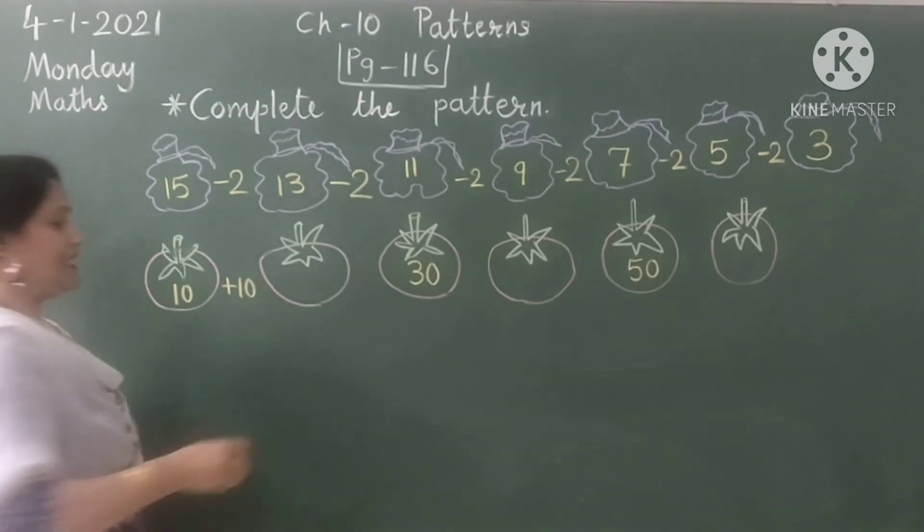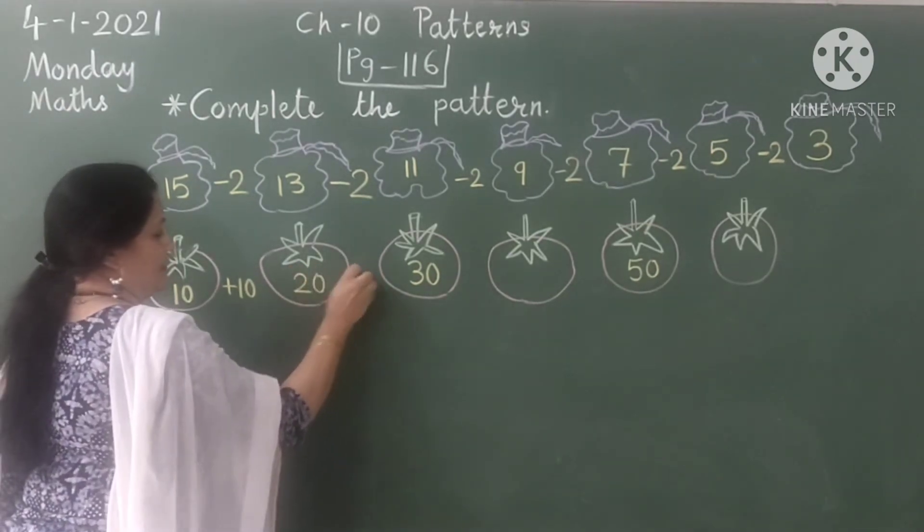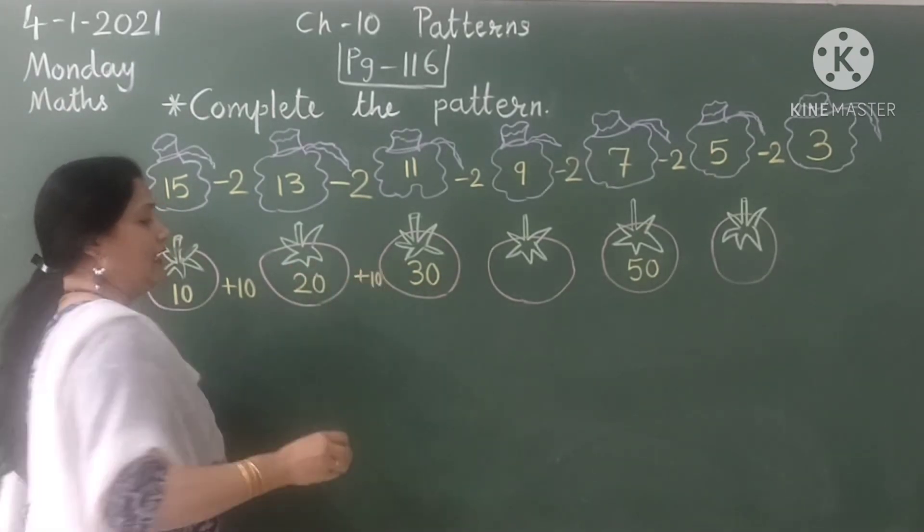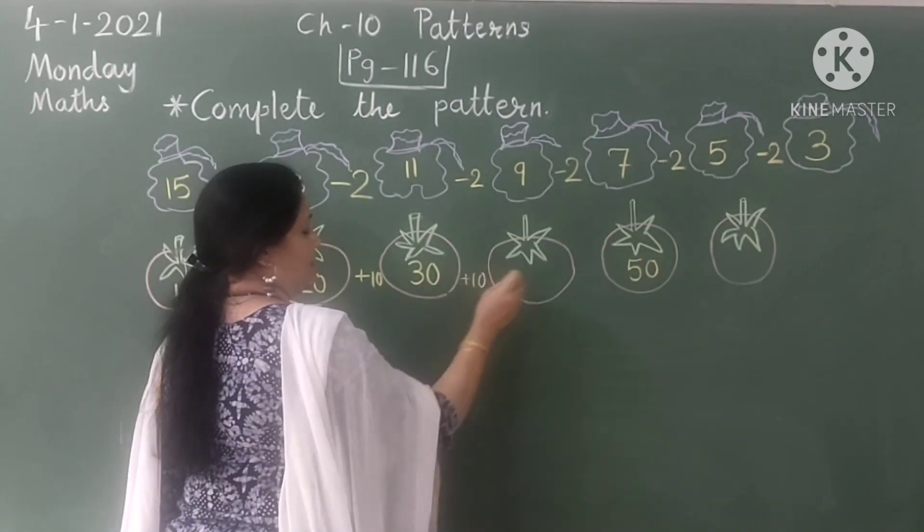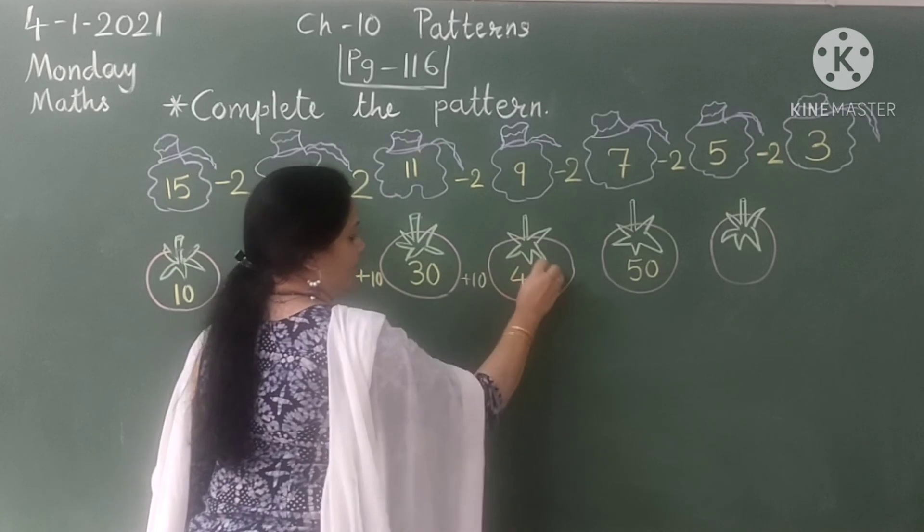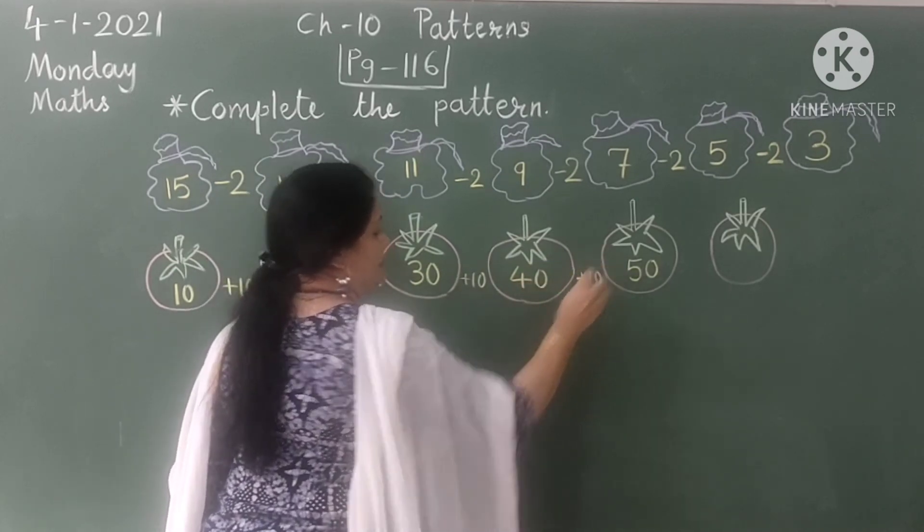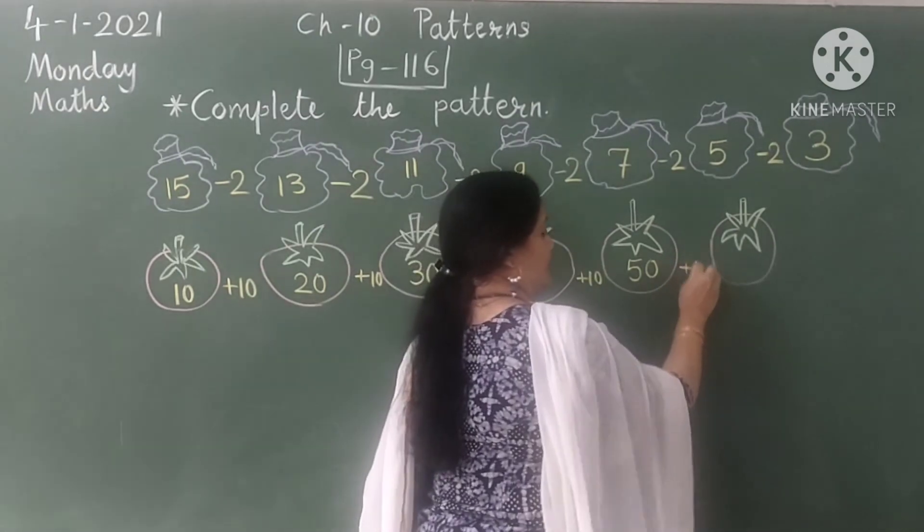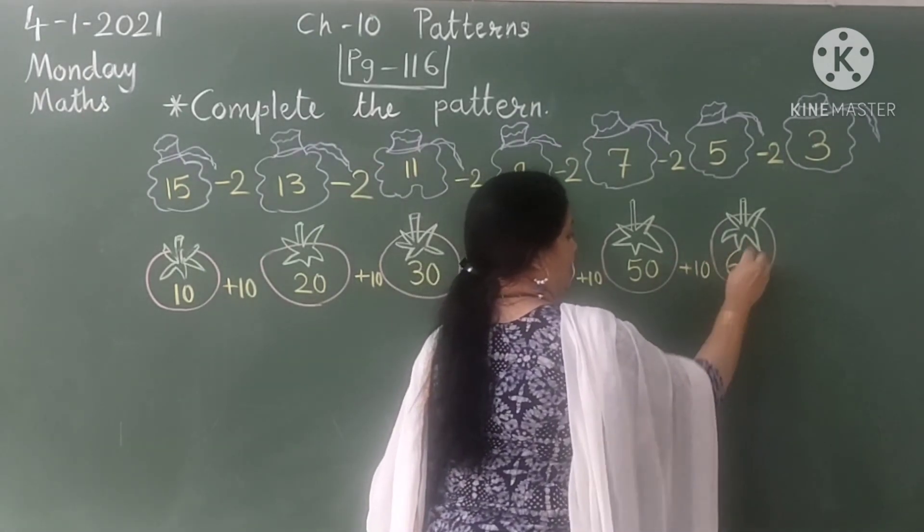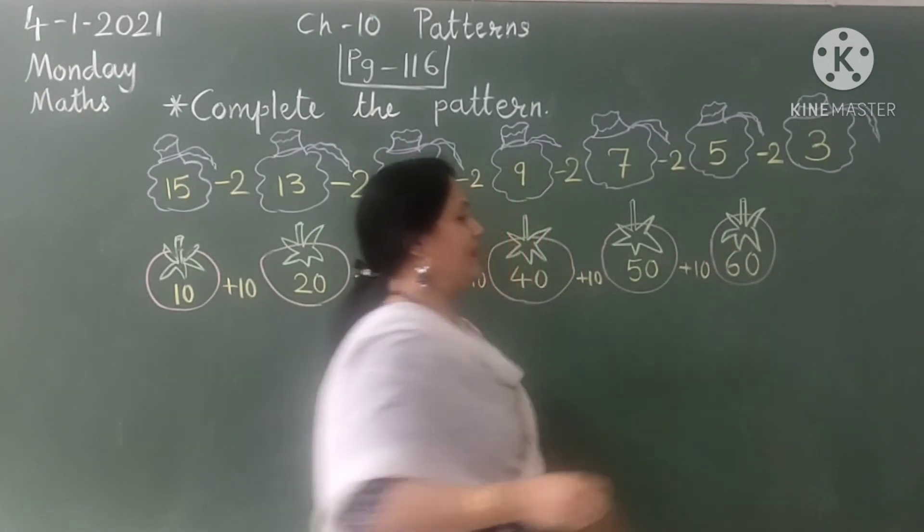20 plus 10 is 30. 30 plus 10 is 40. 40 plus 10 is 50 and 50 plus 10 is 60.